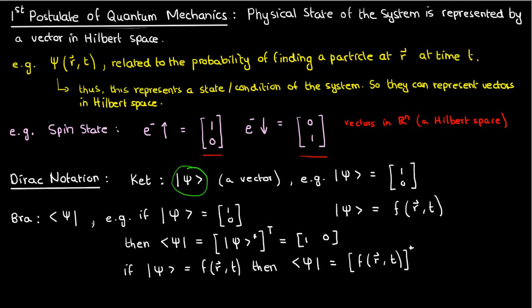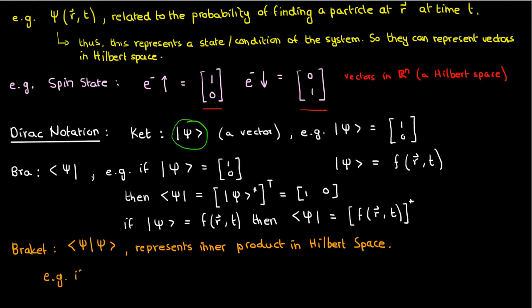Now if we combine the bra and the ket, the two halves of the one whole, we'll get something called a bracket. The bracket is used to represent the inner product in Hilbert space. For instance, if our vector psi is again [1, 0] for the spin-up state of a particle, the bracket between the bra form of psi and the ket form of psi is the exact same as the complex inner product in Cn.